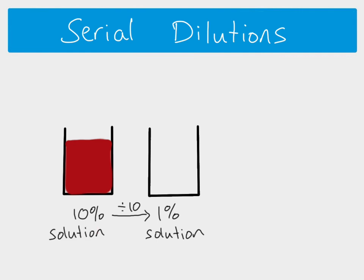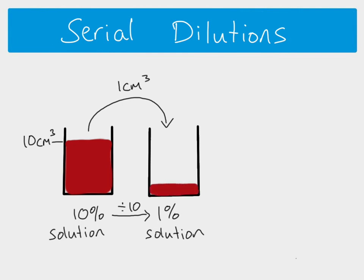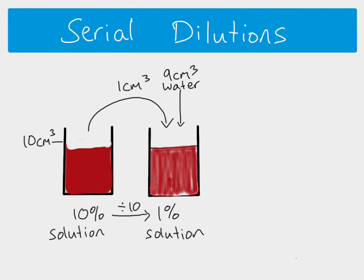What we have to do is actually very simple. If we have 10 cm³ of our original 10% solution, we take out 1 cm³ and put it into a new container. One cm³ out of 10 cm³ is one percent of that solution. We then add 9 cm³ of water, giving us 10 cm³ of our 1% solution.